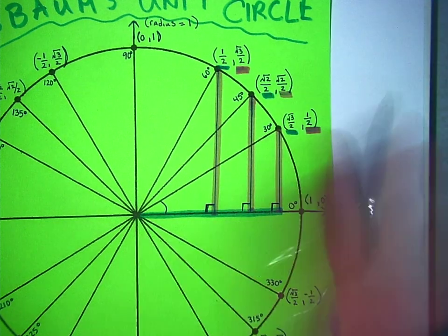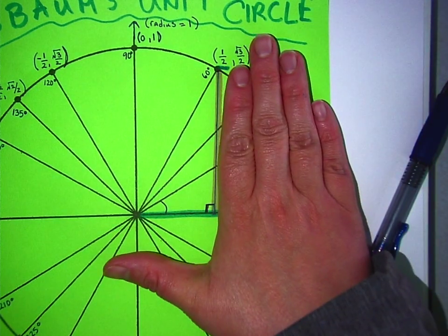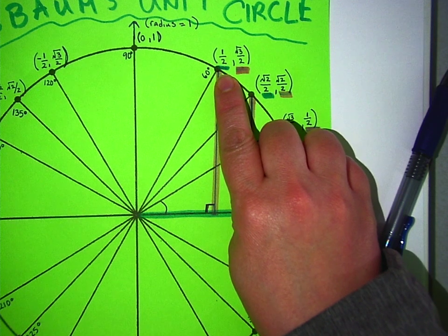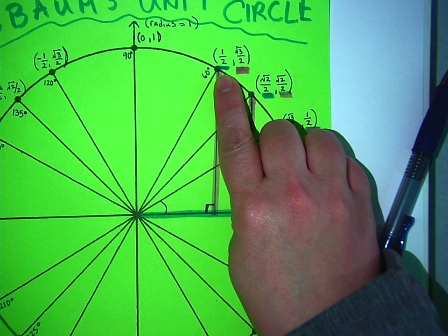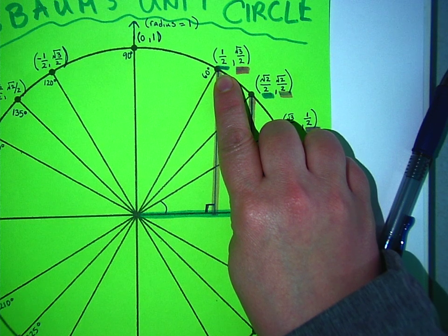Do you remember that the blue part is the x value? Yeah. And the x value is the same thing as? Cosine. Cosine. Good. Cosine.